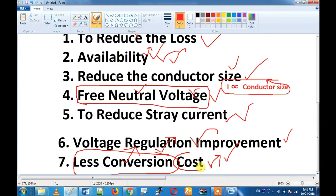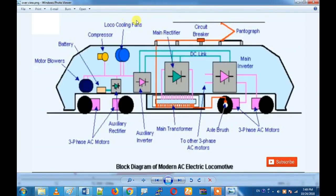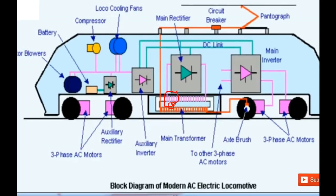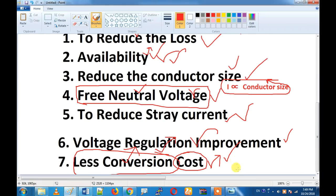Conversion cost can be easy to convert — for example, DC to AC. We have a lot of motors: one VFD motor, a cooling fan, compressor, battery charger, and motor blowers. We have VFD motors. To run a VFD motor, we need to use a VFD motor and we want to use a VFD motor.